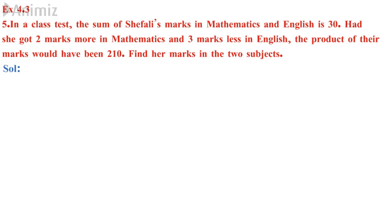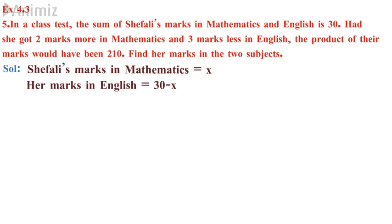So you have to find the marks. Now for the solution: Shifali's marks in mathematics is x, her marks in English is 30 minus x since when we add these 2 you should get 30. Then 2 marks more in mathematics is x plus 2, 3 marks less in English is 30 minus x minus 3. Multiplying you should get 210.